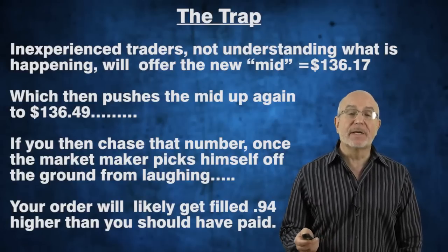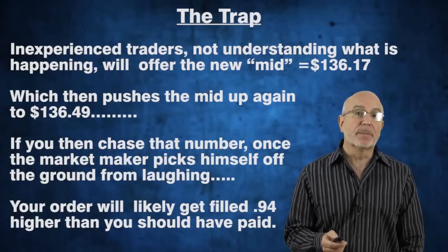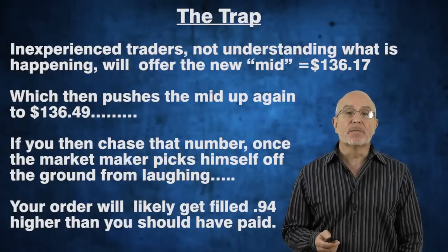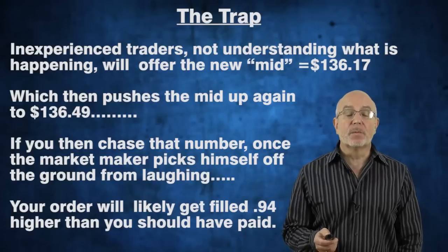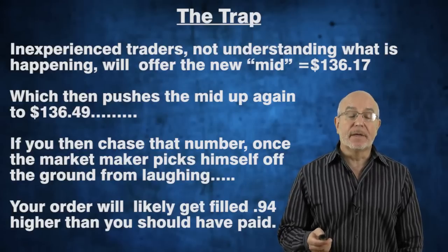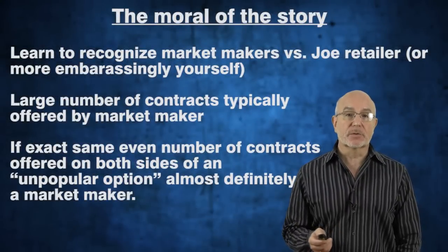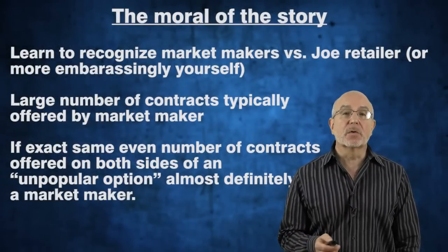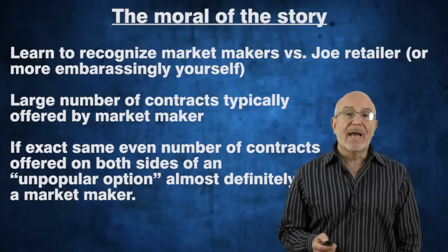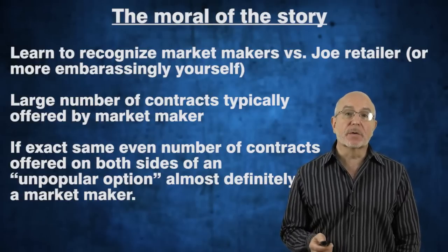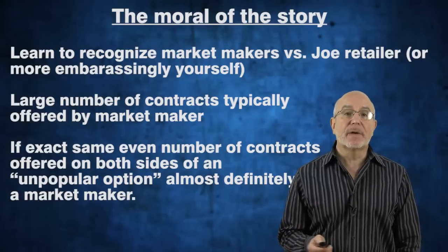Eventually, the market maker won't be able to restrain himself from taking your price because it's way higher than he expected — since that original mid was really what he thought was appropriate value. Your order will get filled, but at a ridiculously high price compared to what you should have paid, had you understood you were basically chasing your own tail. The moral of the story is: learn to recognize the difference between a market maker's offers — normally a fairly large number of contracts on both sides — versus a one-lot or two-lot, which is usually a retail trader and must essentially be ignored.